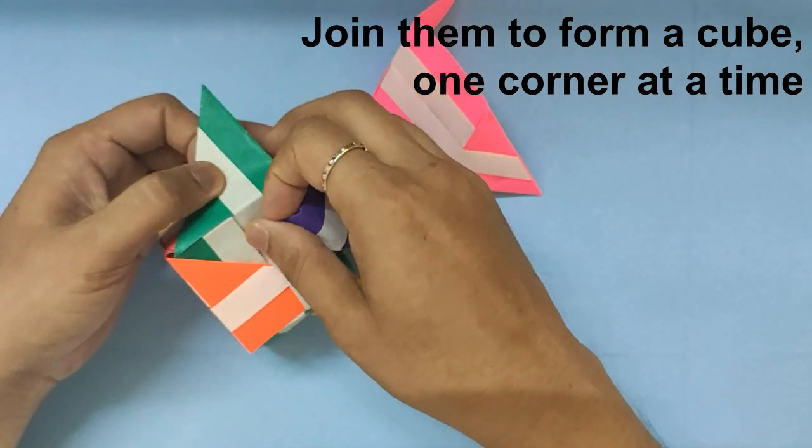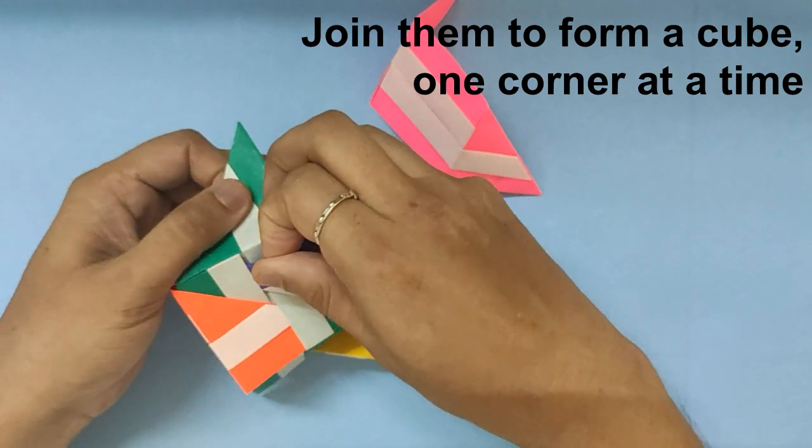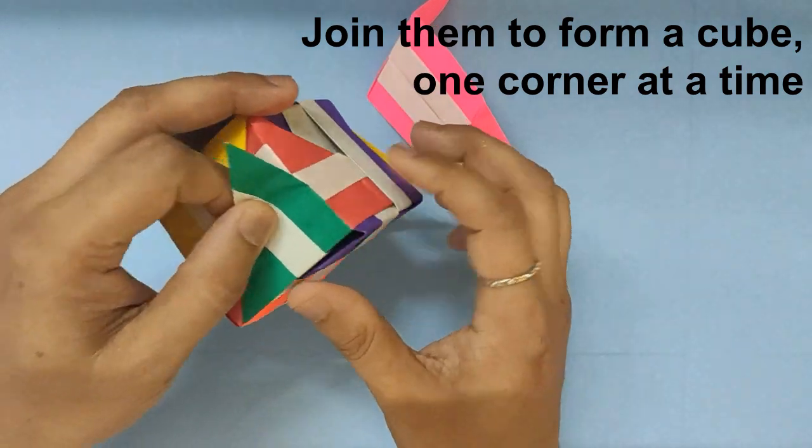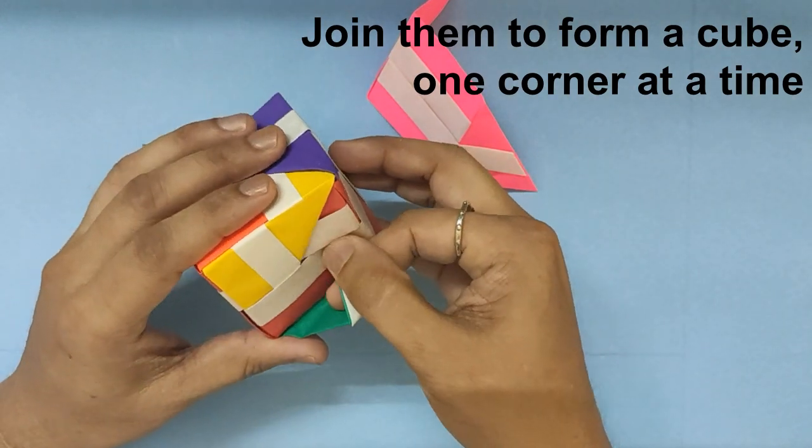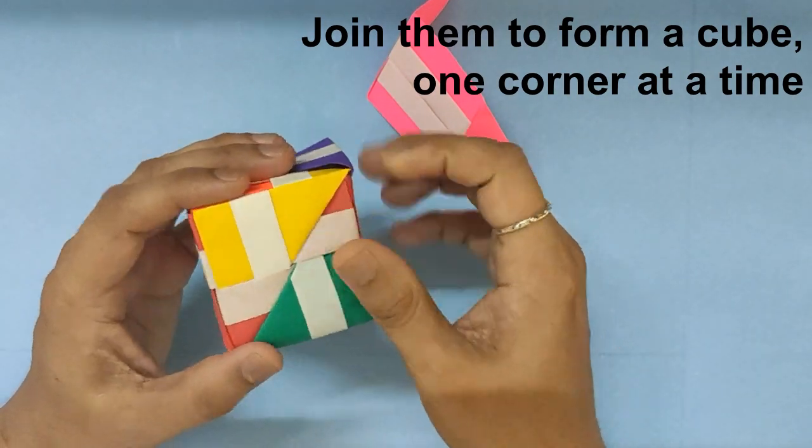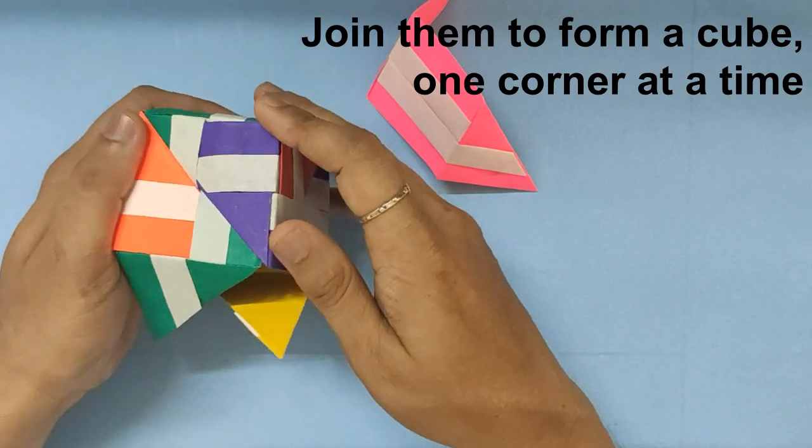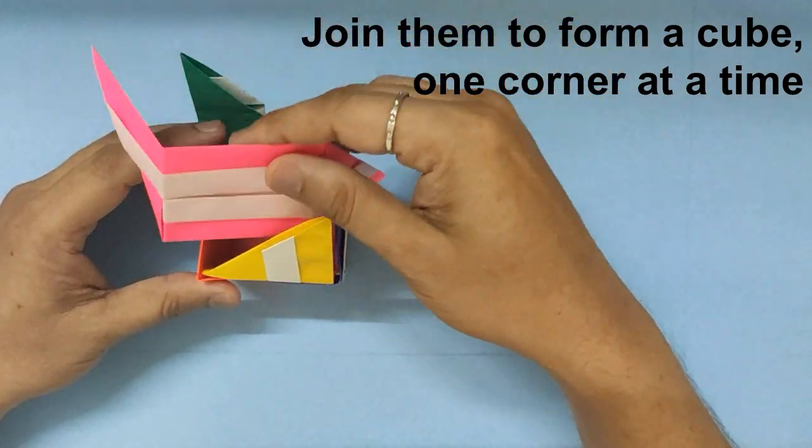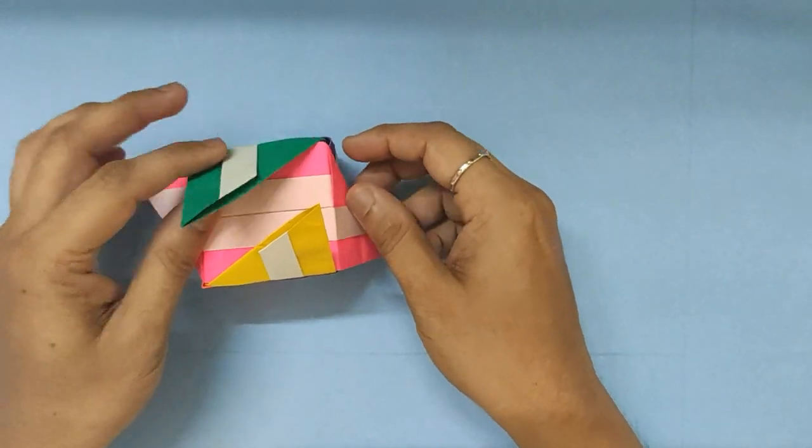And now we are making the other two corners. Each point goes inside a slit, and the last unit fits in like this.